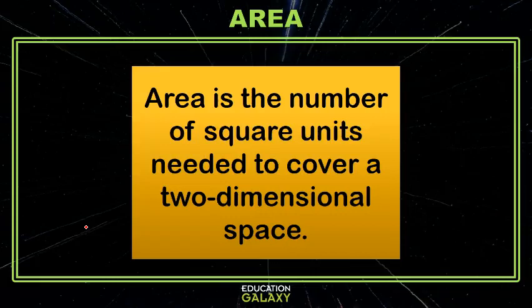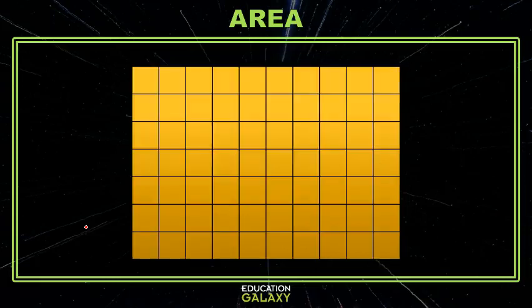Area is the number of square units needed to cover a two-dimensional space and it's the kind of information you might want if you're painting walls or tiling floors and so on. So what if we took that wall and chopped it into equal size squares and then see if we can find the total number of squares.